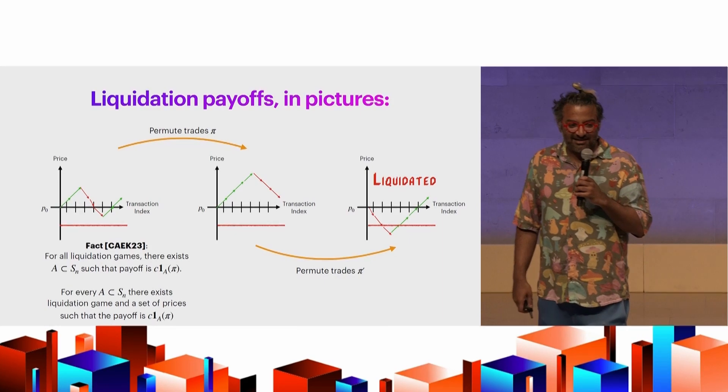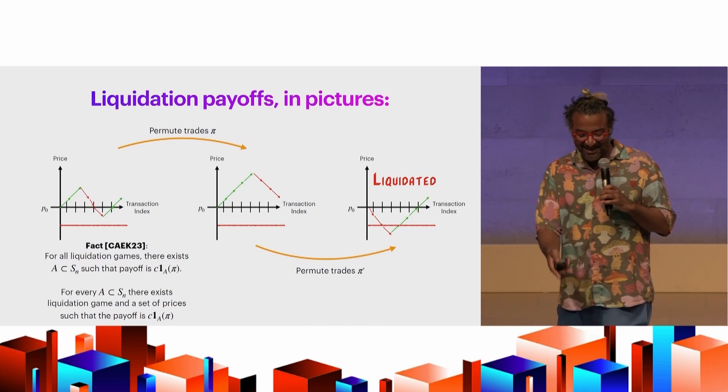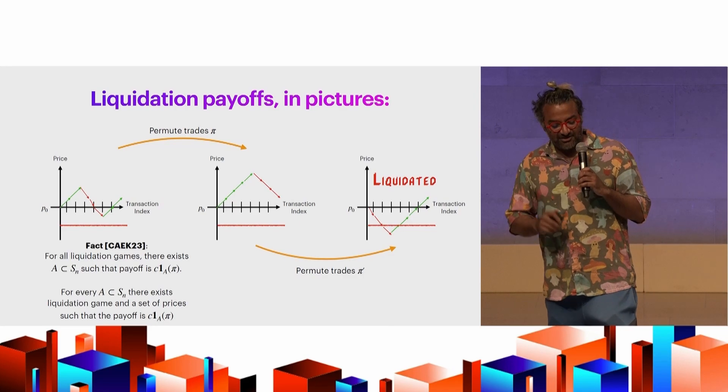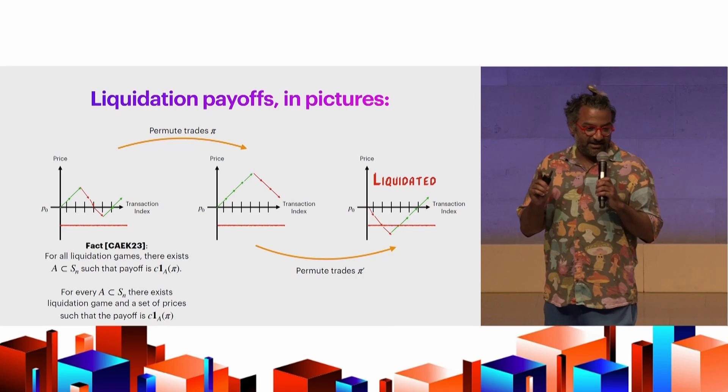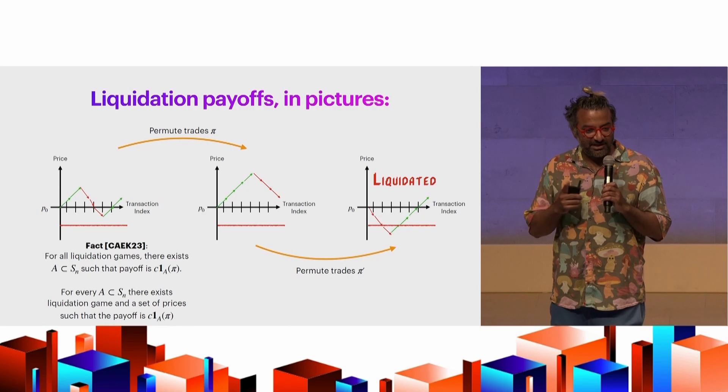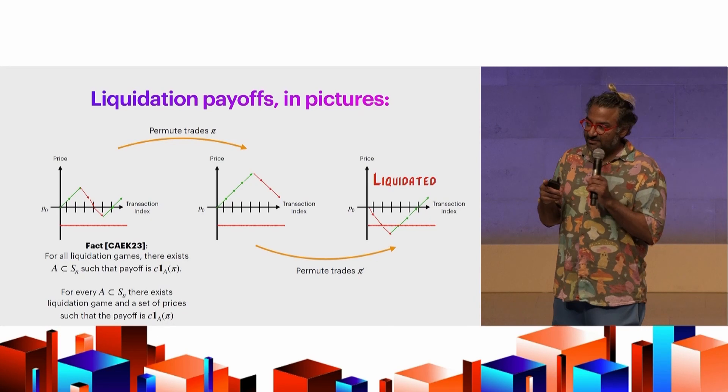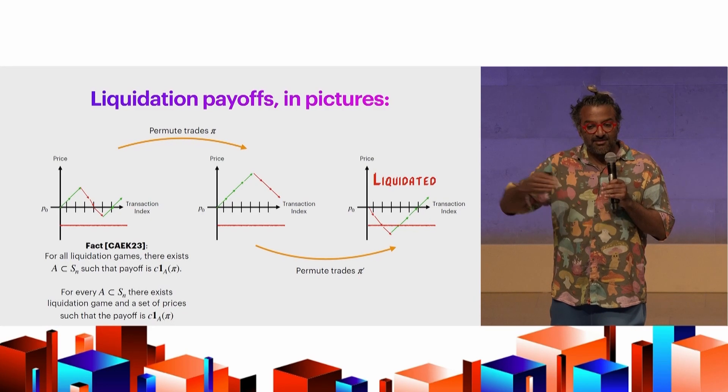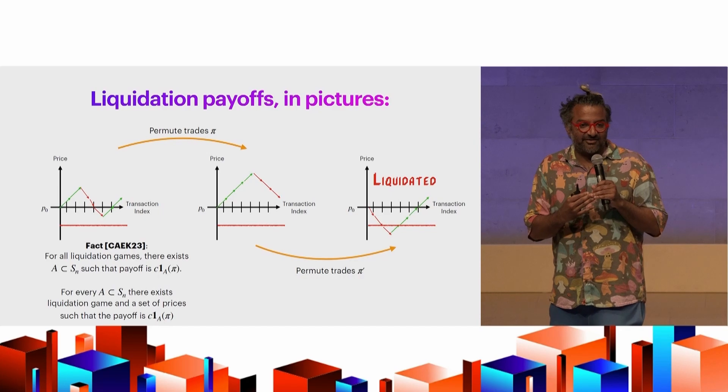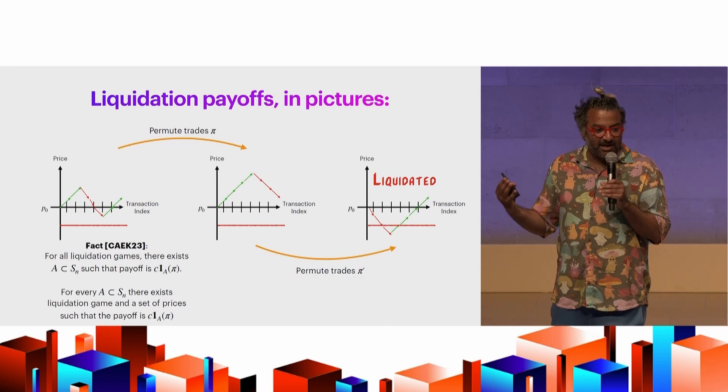And I somehow found some Mortal Kombat fonts online, and I wanted to write, you know, like, the finish him, finish her thing. I figured writing liquidated in that font would be fun. So one very, very interesting fact is any payoff function that you can write in a blockchain that is a function of these reorderings of these permutations can be written as a linear combination of these liquidation games. So any payoff, that means for any application, is written as a sum of these different liquidation games.